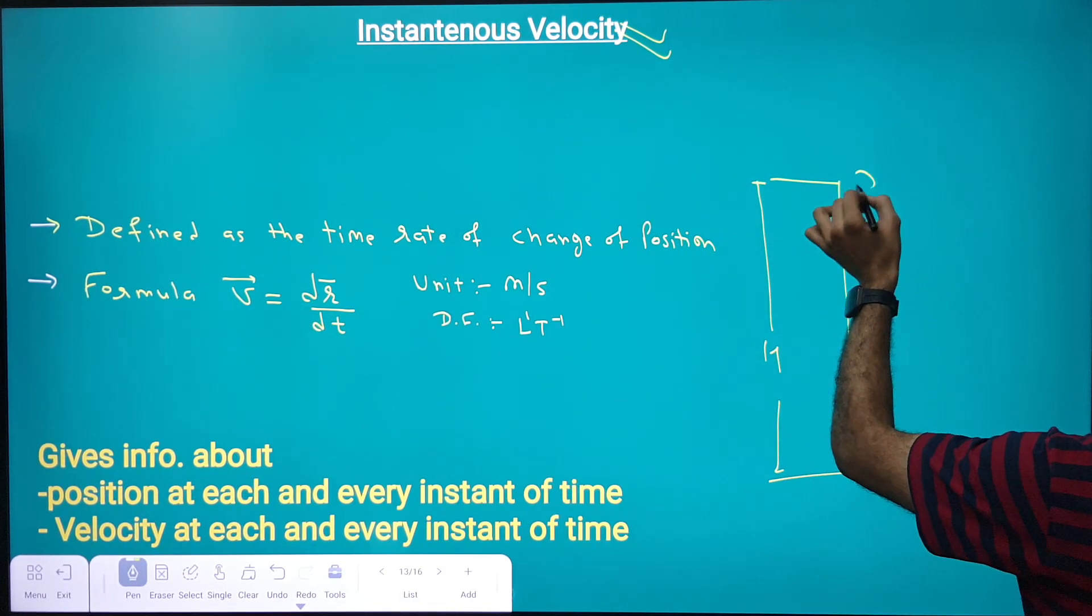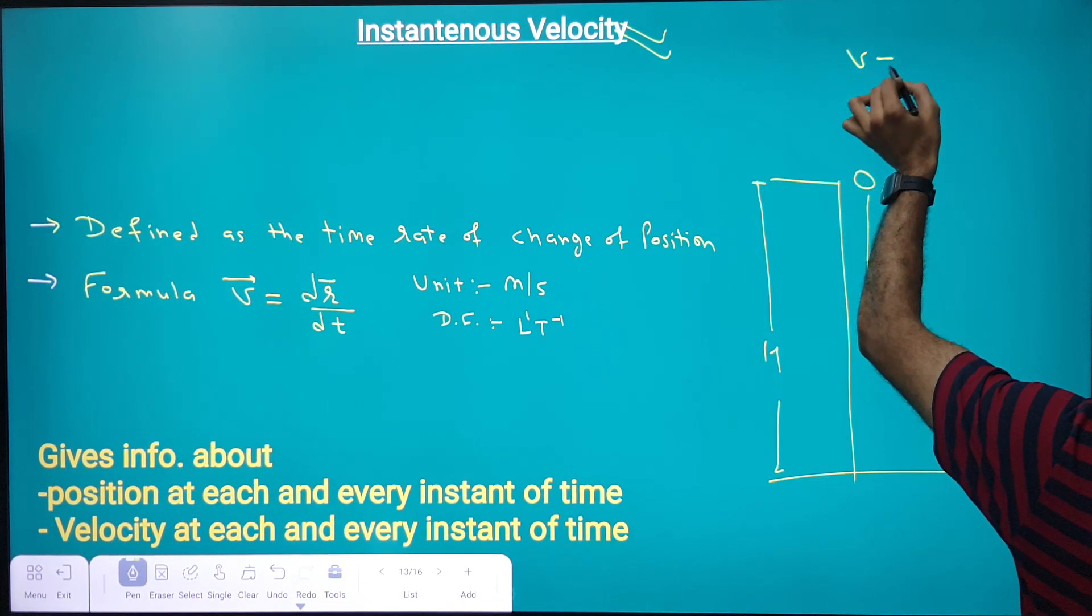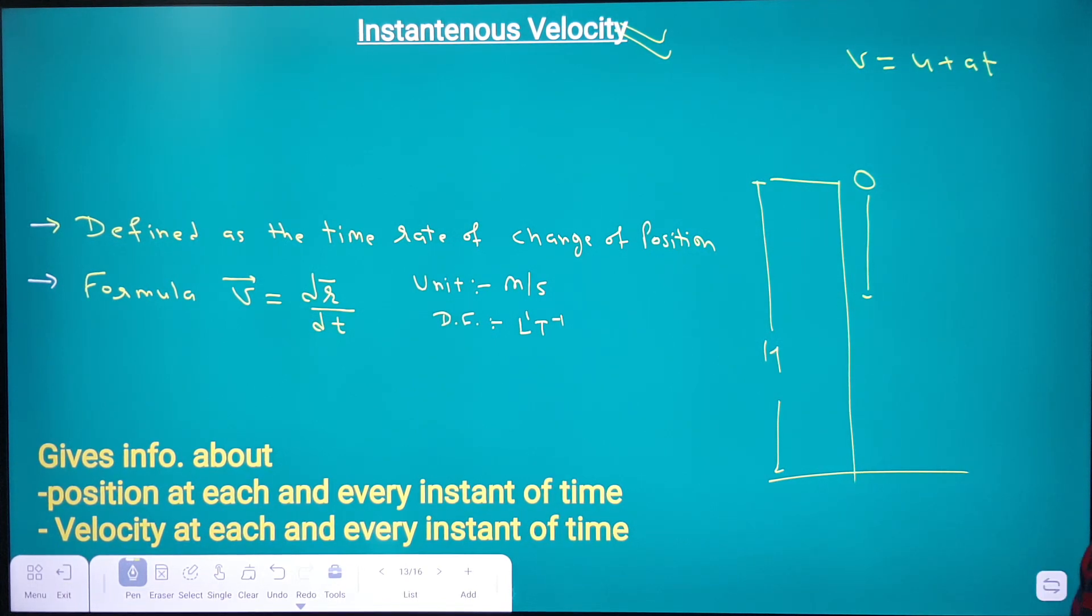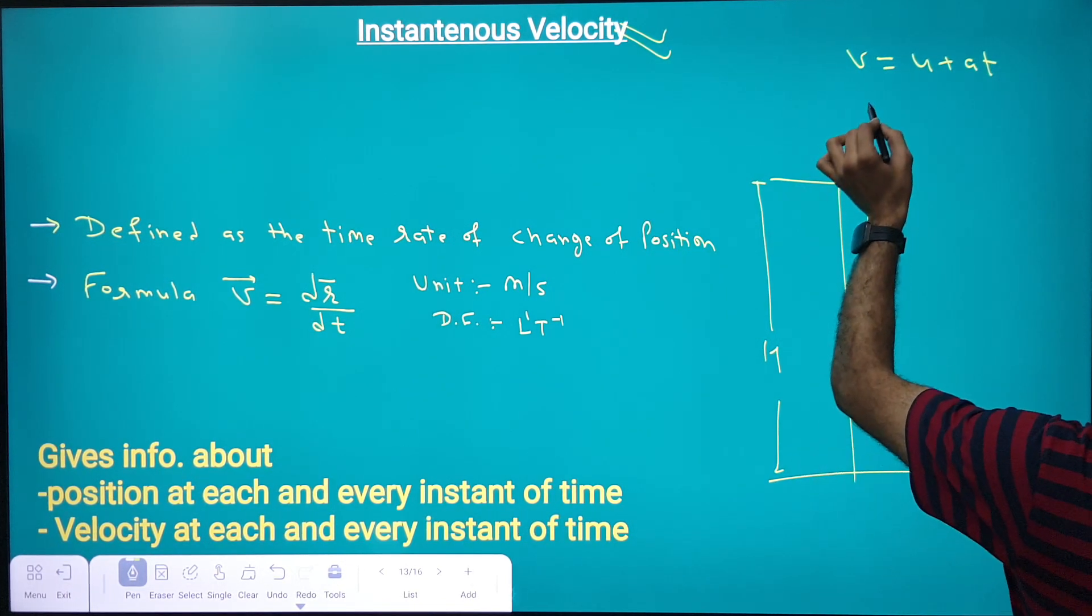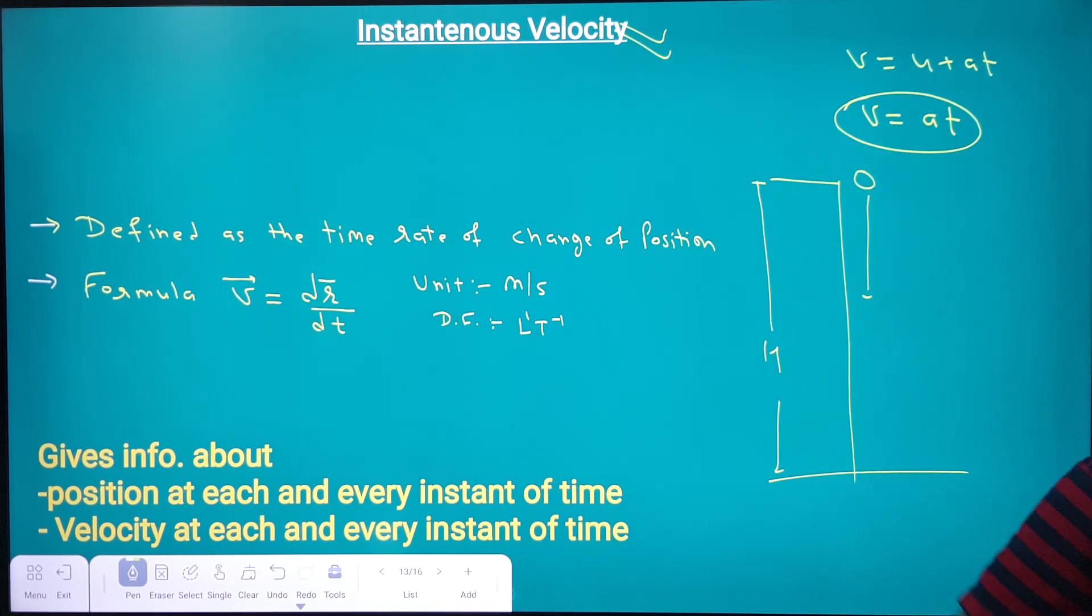When the stone is falling freely, at that time we can have the equation of velocity as v = u + at, because it is an accelerated system. As the initial velocity is zero, we get v = at. So this type of equation is called instantaneous velocity.